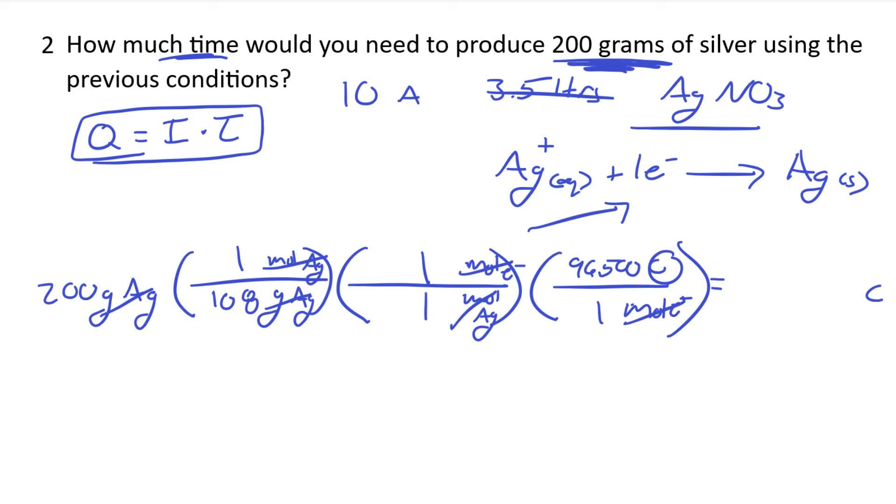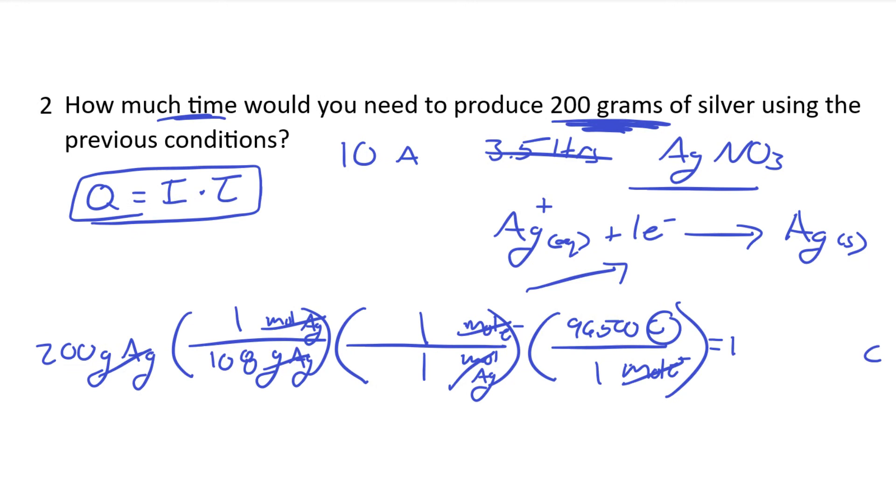So that's going to be 200 divided by 108 times 1, so that changes nothing. Times 96,500. Which gives us an exceedingly large number, which is 1.787 times 10 to the 5 coulombs. That's a lot of coulombs.